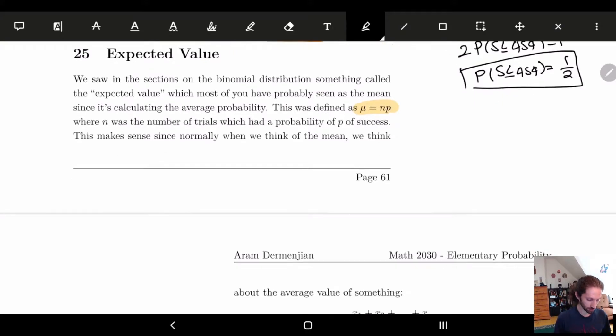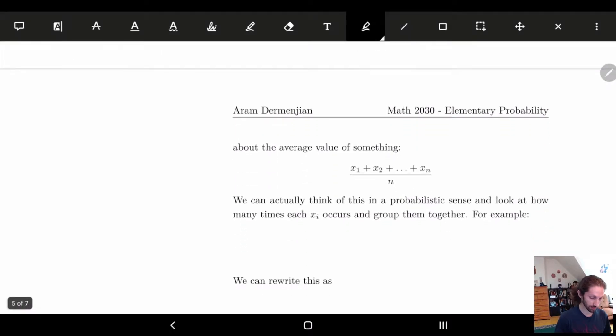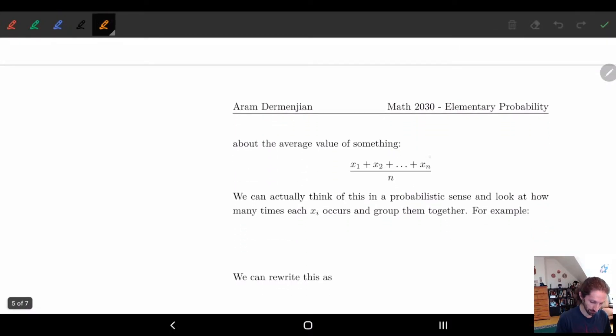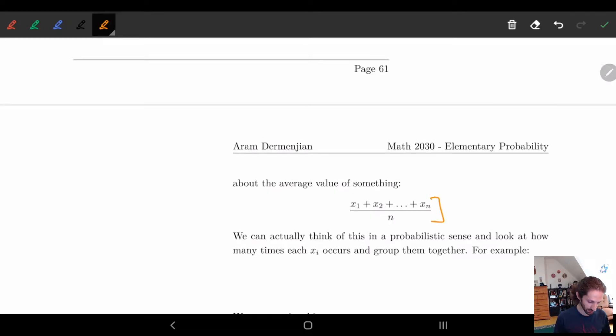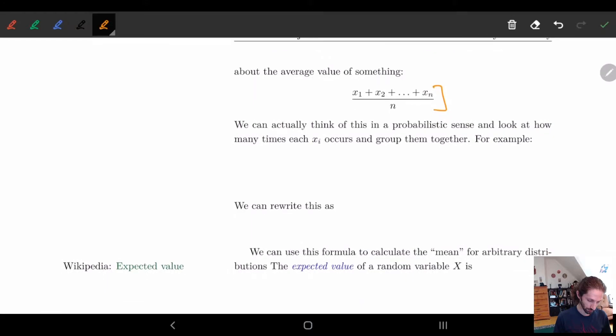And so this average idea, if you think about it, is really looking at something like this, right? Where we have some average where we have n numbers, we add them all together and we divide by the number of numbers we have. So this is basically where this number is coming from. But if we look at this from a probabilistic perspective, we can actually look at this for how many times a certain xi occurs.